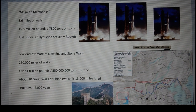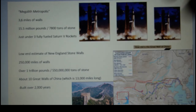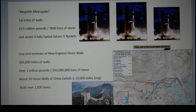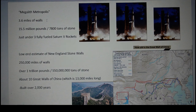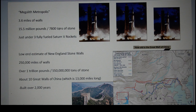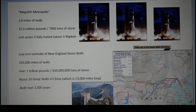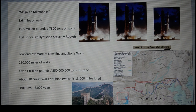The megalith metropolis has 3.6 miles of walls — and that is only the walls on either side of the path; it does not include the walls that branch off, so I'm being very conservative. Using a granite weight calculator, in this 3.6 miles worth of walls there is 15.5 million pounds of granite, or about 7,800 tons — just under three fully fueled Saturn V rockets, the massive rockets used to take astronauts to the moon.